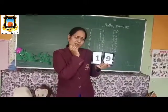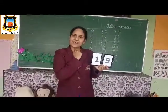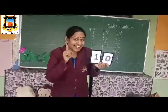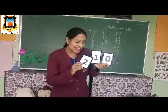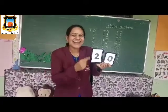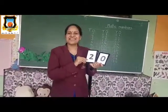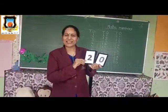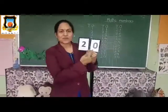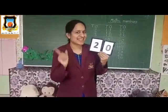So what comes after 19? 19 ki baad kya aata hai? 9 ki baad ten aata hai, toh 19 ki baad kya aata hai? 1 ki baad kya aata hai? 2, teacher. Haa, toh 1 ki jagah pe 2 lagata hai. 2, 0 — 20. Say everyone: 2, 0, 20. Very good. So much mein aap ko 11 to 20. Very good. See, what is this? 2, 0 — 20. 10 and 10, 20. Say everyone: 10 and 10, 20.